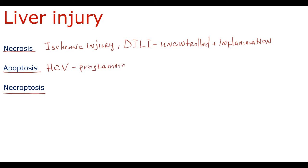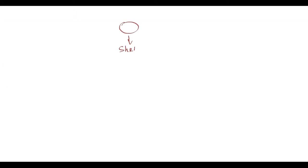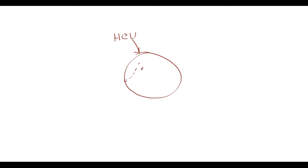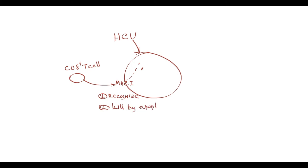Apoptosis is a programmed, non-inflammatory cell death that involves single or a small group of cells. Apoptosis occurs by shrinkage of the cell, followed by cellular fragmentation into apoptotic bodies, which are removed by macrophages. So apoptosis is a clean cellular death without inflammation. As an example, when hepatitis C virus infects hepatocytes, the cells begin to produce endogenous proteins of this virus that are presented on the hepatocyte surface by MHC1 molecules. When CD8-positive T cells screen MHC1 molecules on their surface, they recognize viral proteins and kill the infected cells by apoptosis.